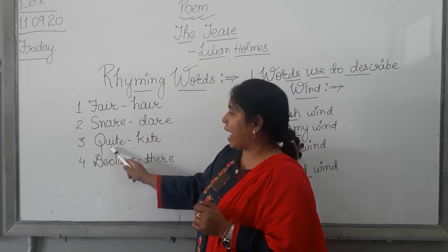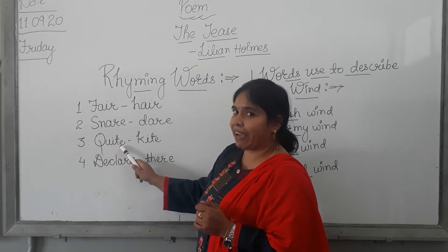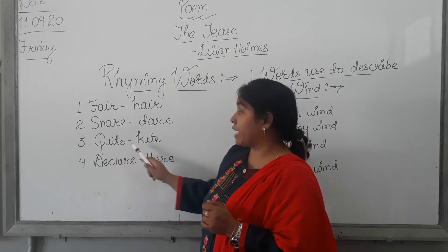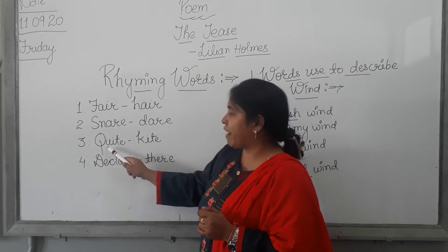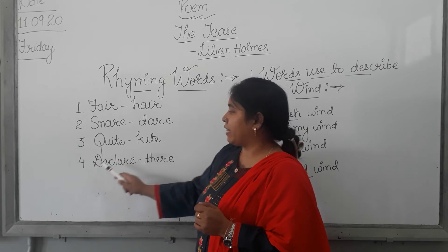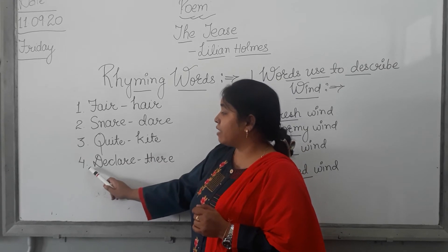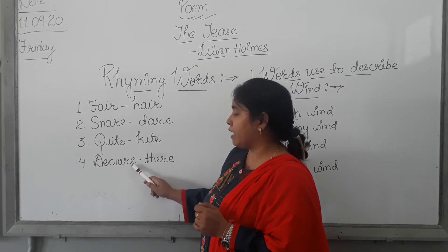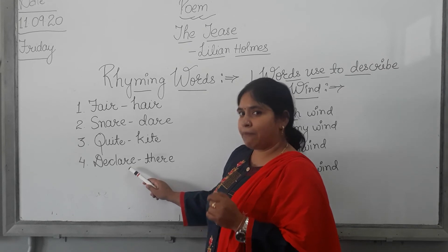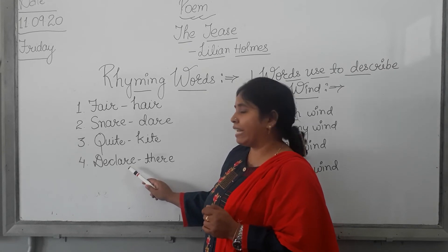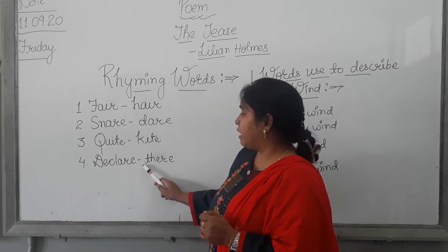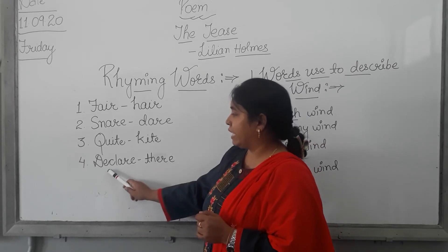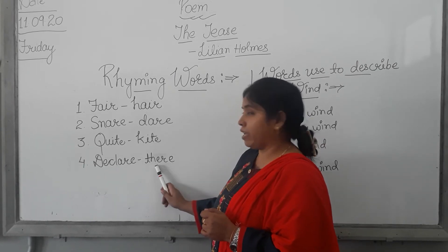Next is Q-U-I-T-E, quite. And the rhyming word for 'quite' is K-I-T-E, kite. Quite, kite. And the last word is D-E-C-L-A-R-E, declare. And the rhyming word for 'declare' is T-H-E-R-E, there. Declare, there.